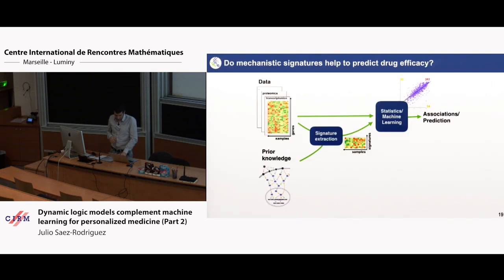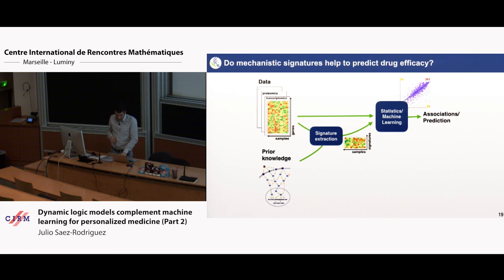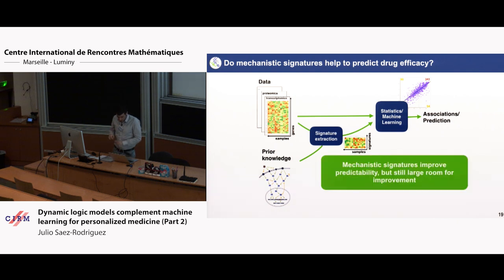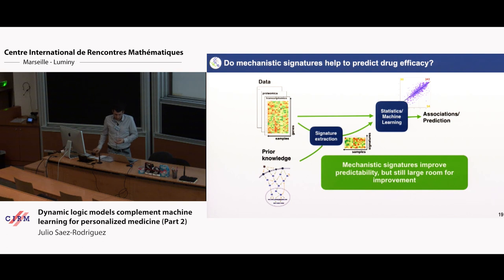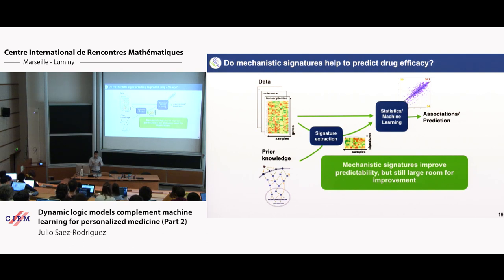So, to summarize what I said: using these mechanistic signatures and the examples I showed, I think it has added value and it helps. But there is still a lot of room for improvement — it's really not a solved problem. And everything I showed you on this large collection of cell lines is the work of our group with our collaborators.